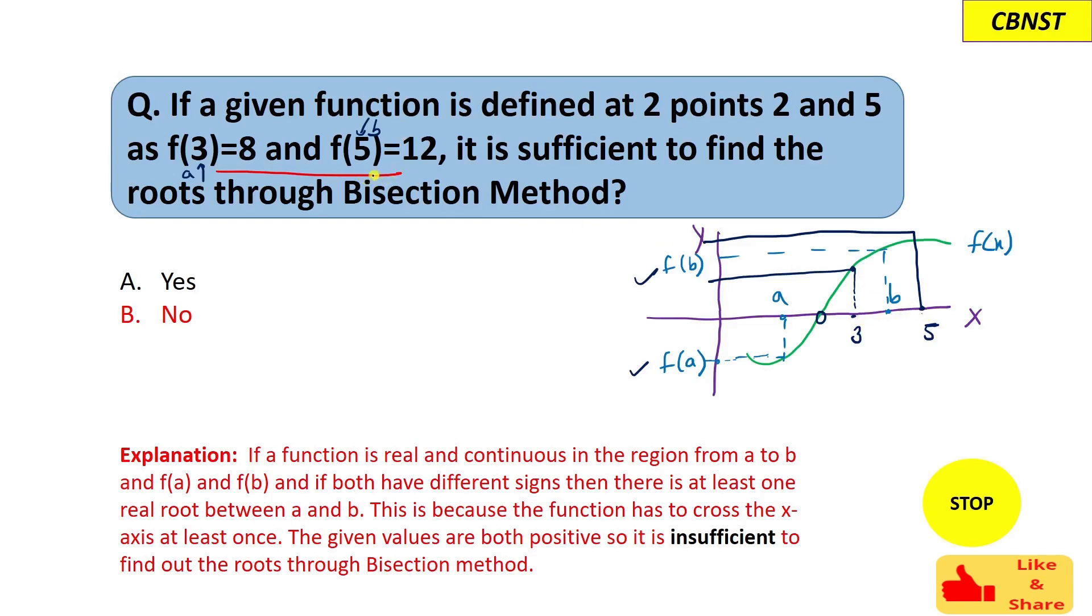So what we want, we want one positive function value and one negative function value, then only we can proceed with the bisection method. That's why the answer was no. We have to find one function value which is of opposite sign. Other than the positive answer, we want one function value which is of negative sign also to proceed with the bisection method.